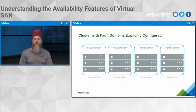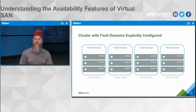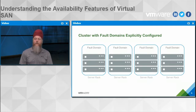Fault domains are important when you have multiple server racks, each served by power units or top-of-rack switches. If you define all hosts within a rack as a fault domain, vSAN will spread components across those fault domains just as it does across hosts. So if you have three racks with failures to tolerate set to one, losing an entire rack means vSAN continues to function and no data is lost.